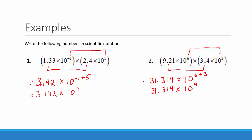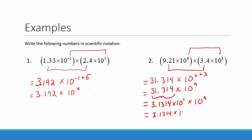This is not in scientific notation because we have two digits to the left of the decimal point. We need to move the decimal point to be between the 3 and the 1 and write the rest of the digits. So this part is equal to 3.1314 times 10 to the positive 1. Then we multiply that by 10 to the 9th, and we add our exponents — 1 plus 9 — which gives us 3.1314 times 10 to the 10th.